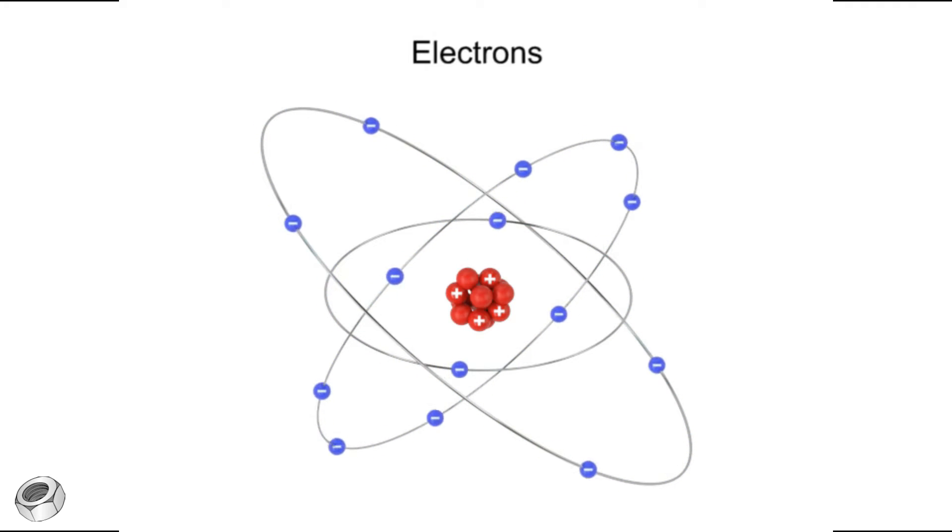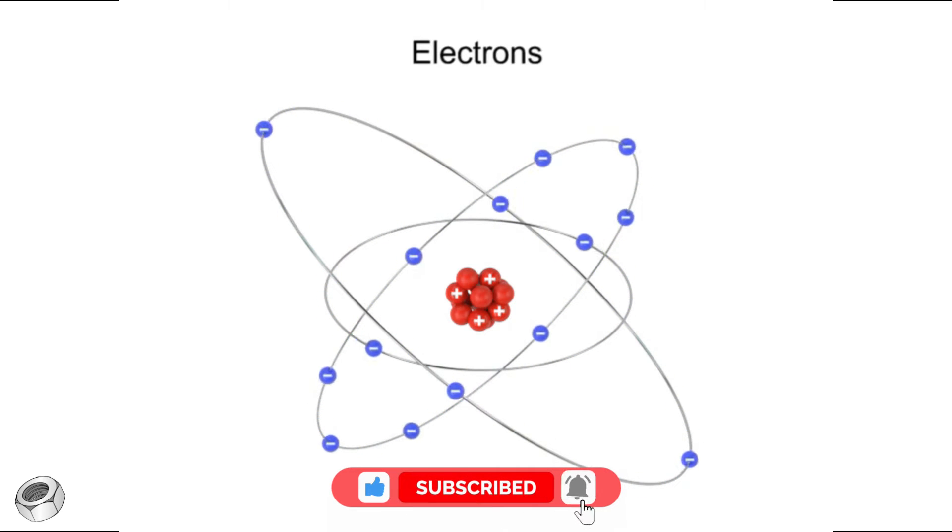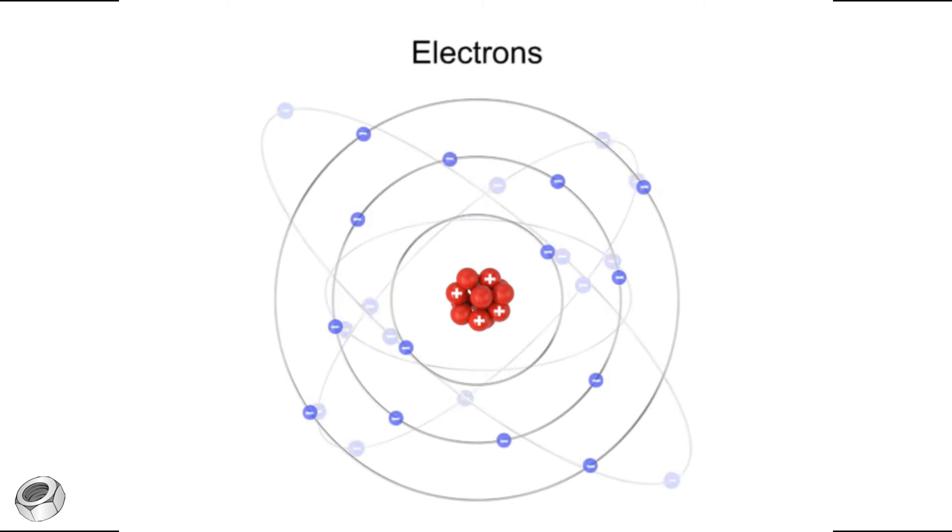Electrons move around the nucleus of an atom in concentric orbits. These orbits or shells represent different energy states that electrons can exhibit. The farther an electron is from the nucleus, the greater its potential energy.